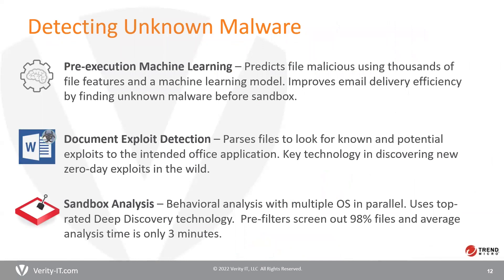Even though the bad guys are swiftly changing their tactics, there are ways to prevent and mitigate such attacks. Security solutions today are specifically designed to outsmart these attacks, such as machine learning, which improves email delivery by finding unknown malware. Then there's document exploit detection, which scans files for potential exploits in office applications. And sandbox analysis pre-filters your email to analyze any malicious content.